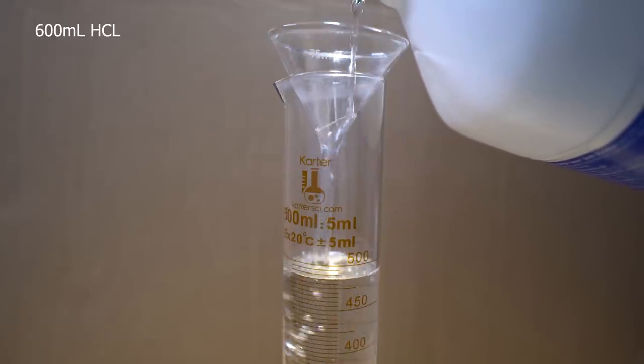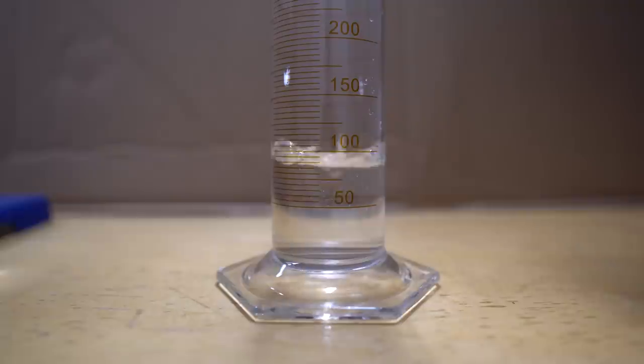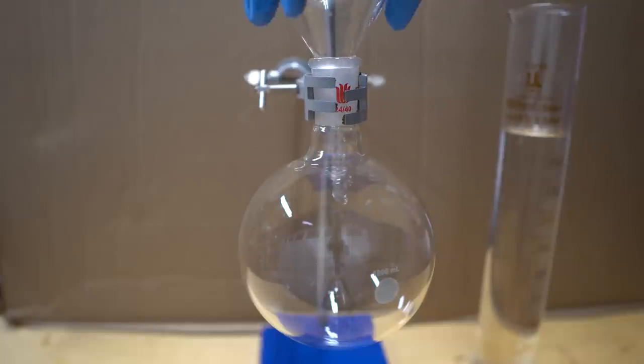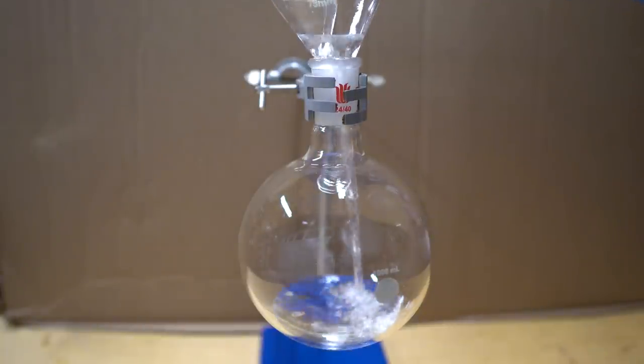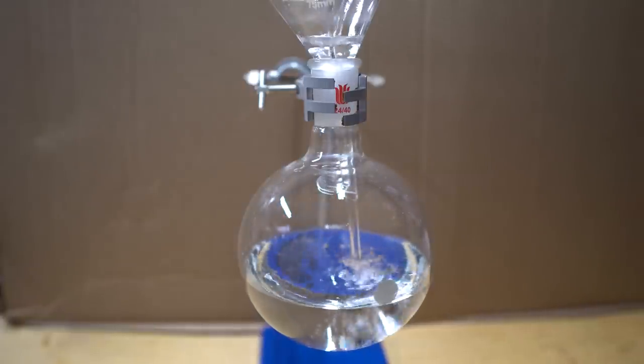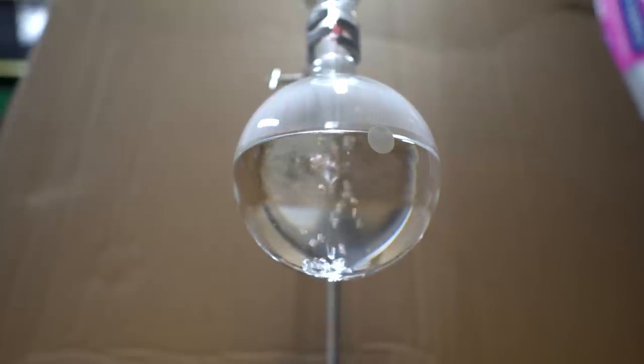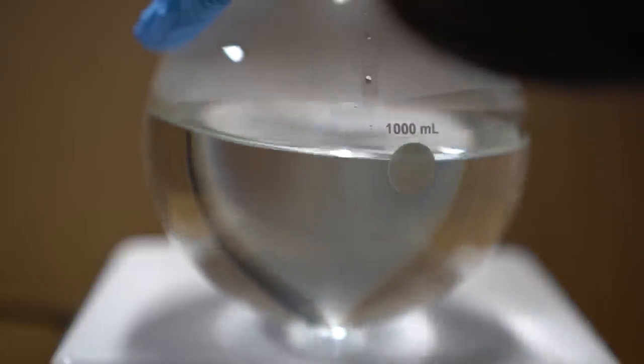We're going to start out with 600 milliliters of hydrochloric acid. I don't know why I used this giant graduated cylinder, but I wanted to make sure everything was accurate. We're going to add this into a one-liter round-bottom boiling flask. I just wanted to show you this really cool shot that I got as well. We're also going to put this onto a hot plate because we're going to need stirring.